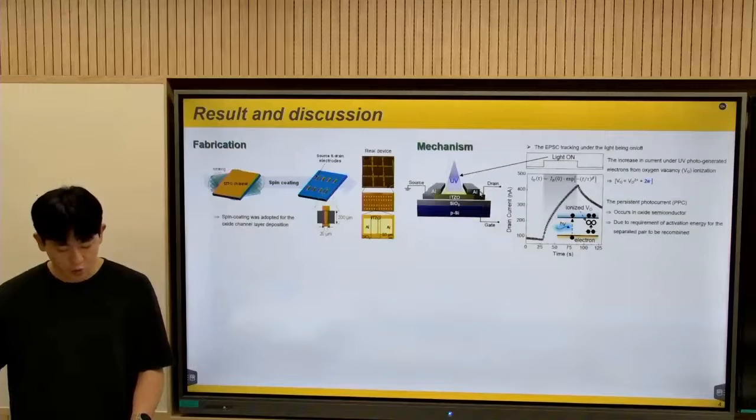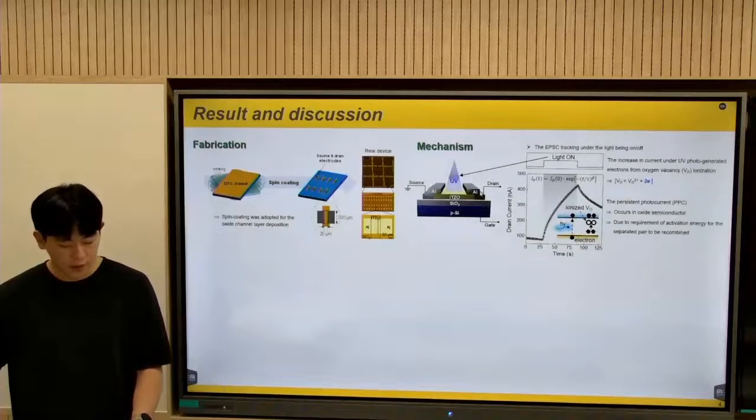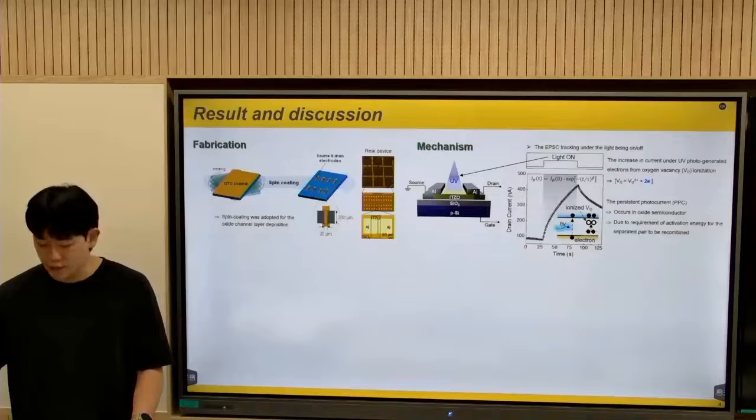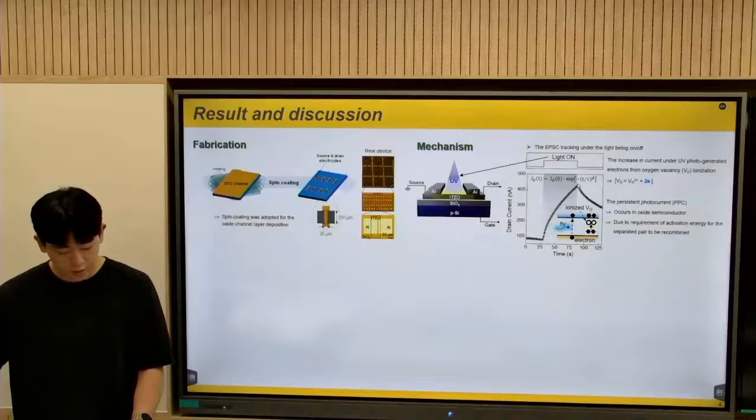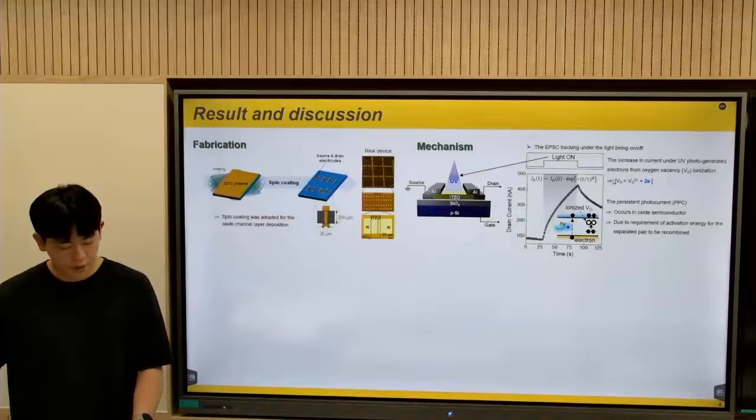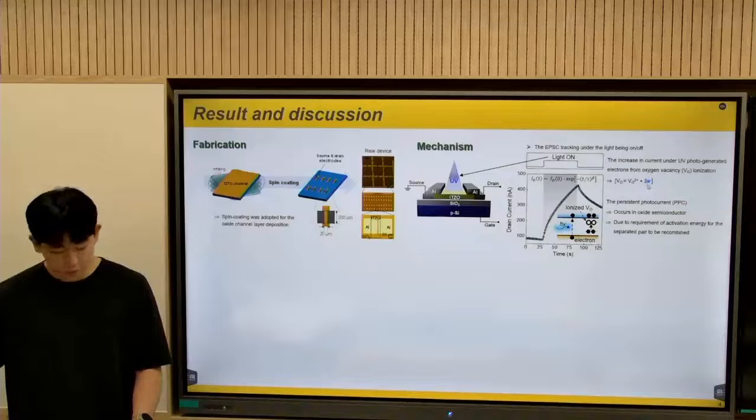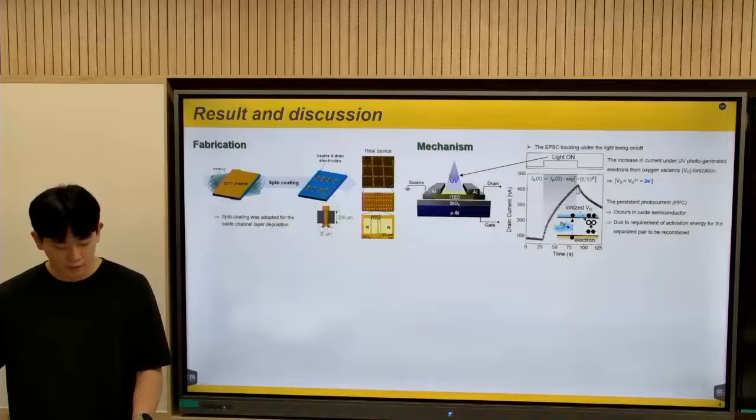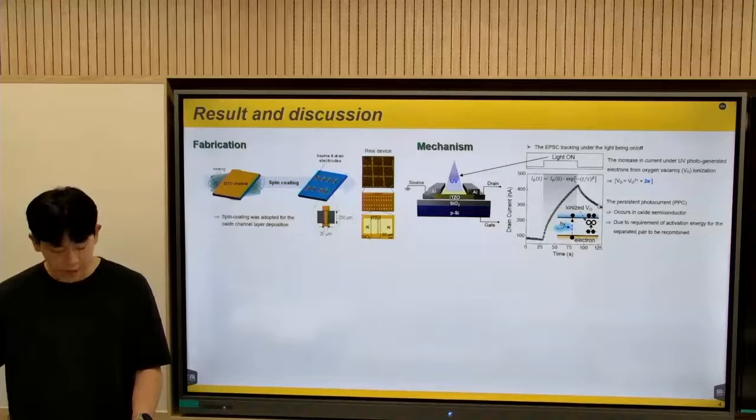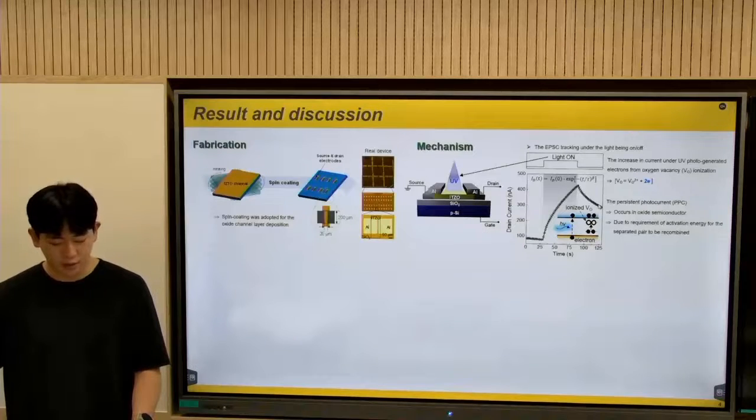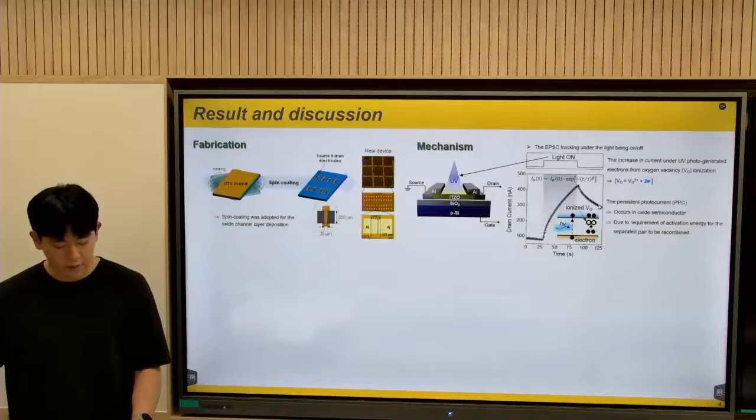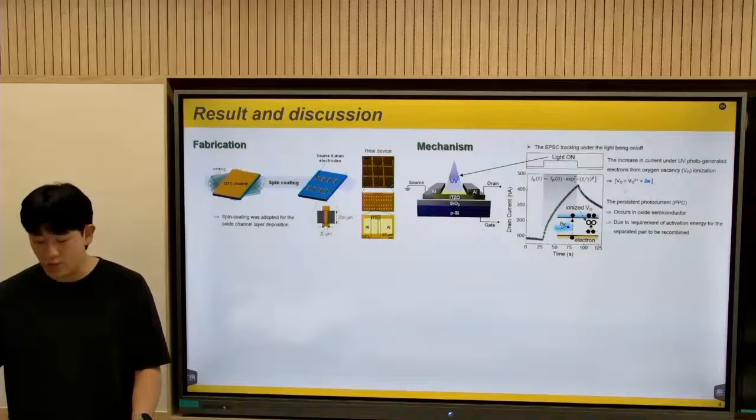Next up, the mechanism. When the device is under elimination of UV, the current drastically increases, as you can see here, due to the photo-generated electrons from the oxygen vacancy ionization. Whereas, when the power is off, the current decays slowly back to its original state because of the requirements of activation energy when they are recombined back.